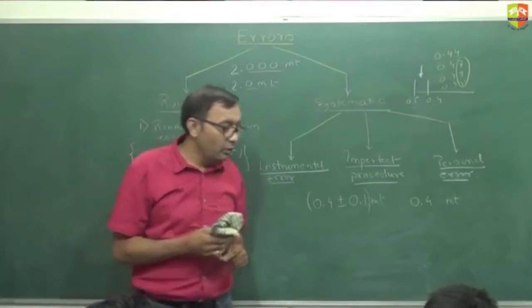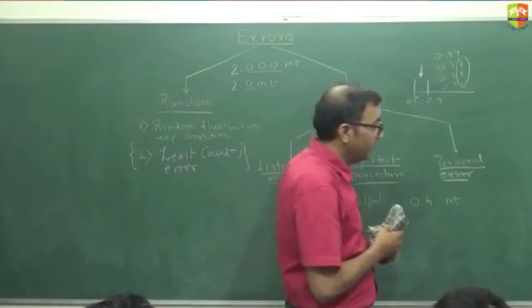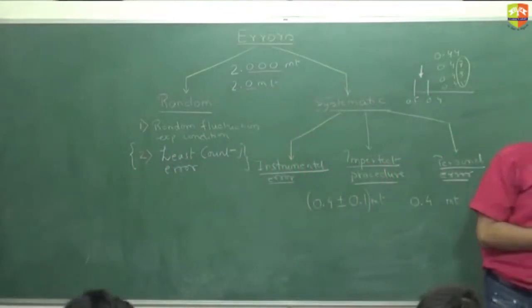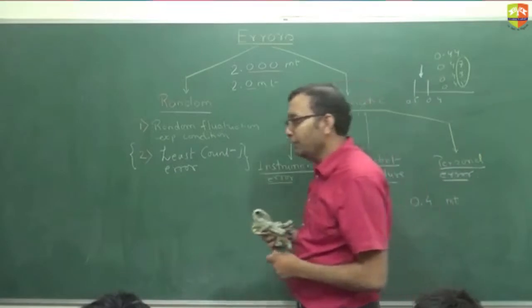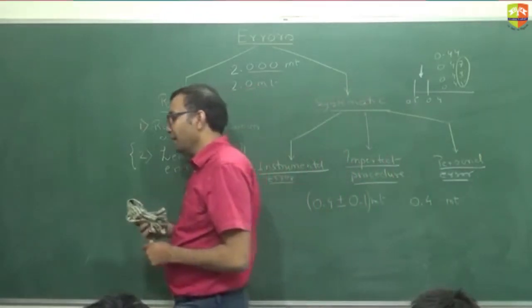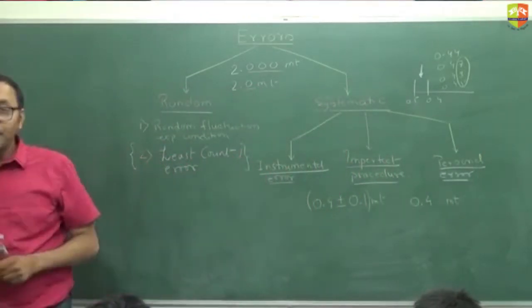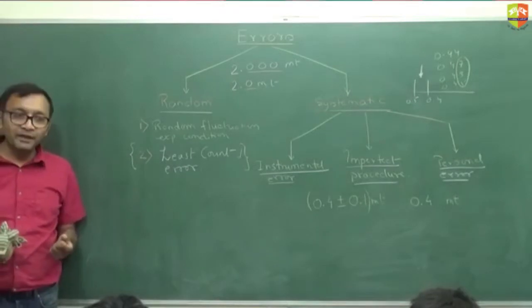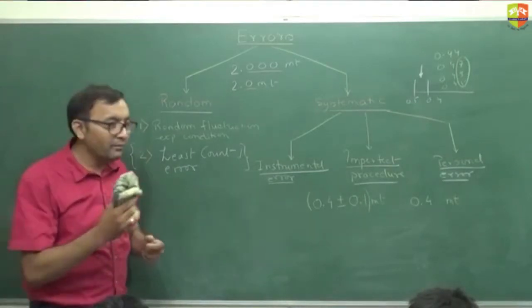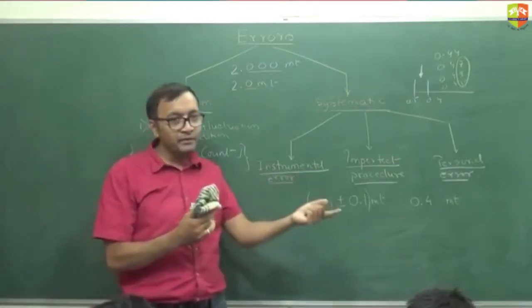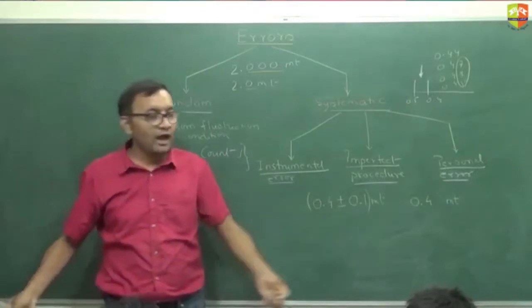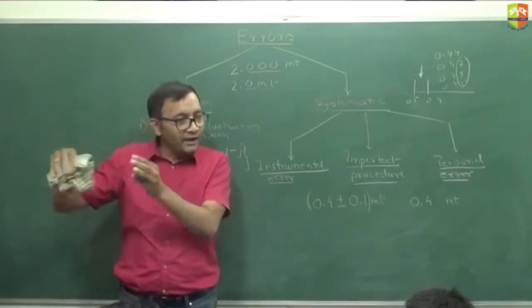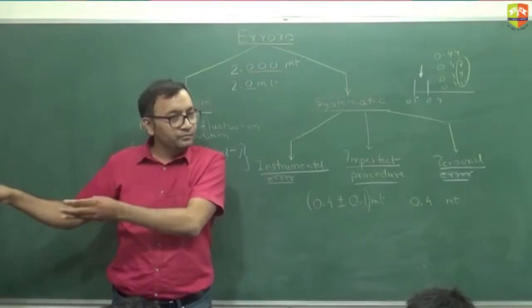The only way to minimize the error in the measurement is to take multiple readings. What will happen then? Sometimes the random error will get added up, sometimes it will get subtracted. So when you add up all the readings, whatever is random will add up to zero.